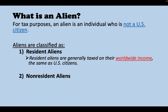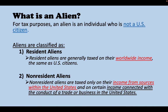How are they different? Resident aliens are generally taxed on their worldwide income, the same as U.S. citizens. Non-resident aliens are taxed on their income from sources within the United States and certain income connected with the conduct of trade or business in the United States. The amount of income to be taxed is different — one is worldwide income, the other is U.S.-source income only. If you have income from different countries, you will be taxed more as a resident alien.